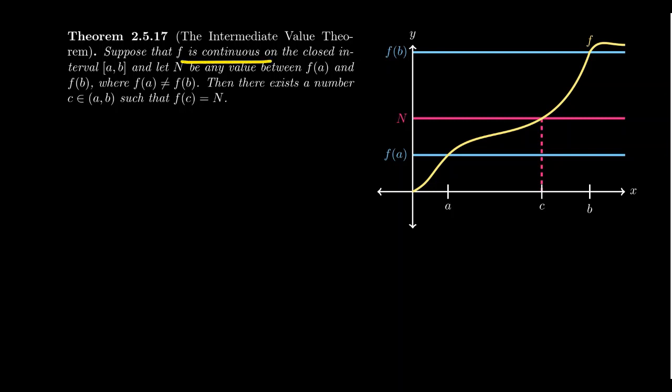Getting back to it, if f is continuous on some closed interval a to b, and you have some intermediate value N between the y-coordinates f(a) and f(b), then there exists a number. So there's guaranteed a number in the domain. That is, there's some number c that sits inside the interval a to b. This notation here just means that c is greater than a but less than b. There's some intermediate number between a and b that guarantees that f(c) equals N.